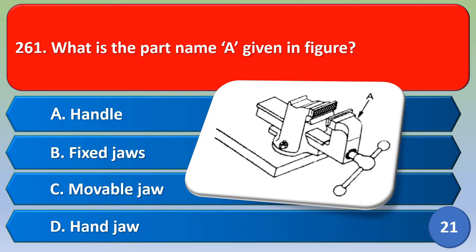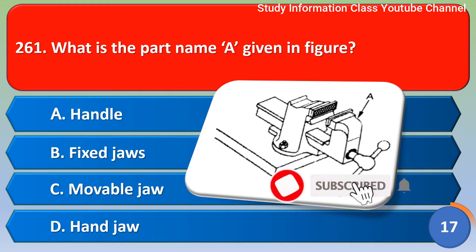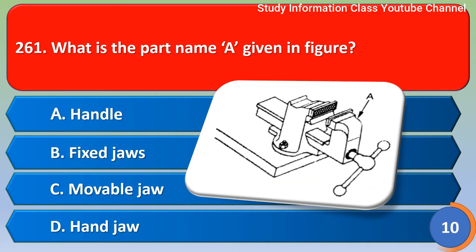Namaste. What is the part name given in the figure? Option A: handle, Option B: fixed jaw, Option C: movable jaw, Option D: end jaw. The correct answer is Option C, movable jaw.